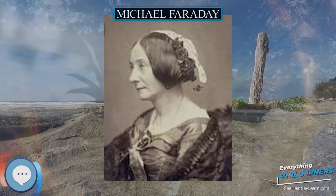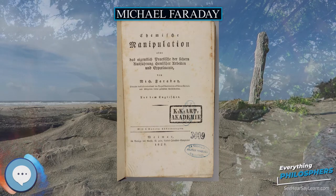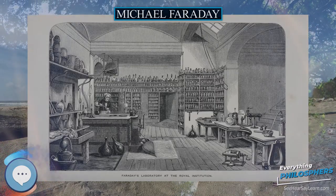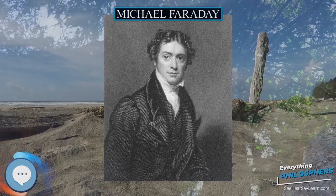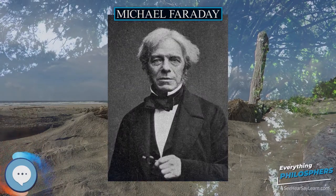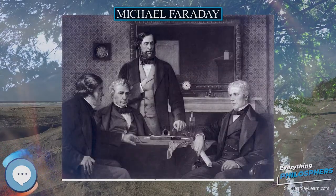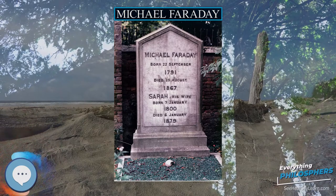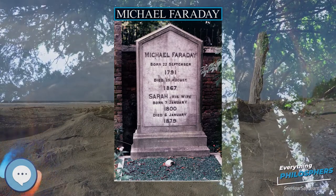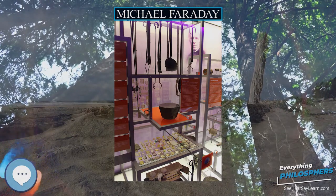Faraday married Sarah Barnard on June 12, 1821. They met through their families at the Sandemanian Church, and he confessed his faith to the Sandemanian congregation the month after they were married. They had no children. Faraday was a devout Christian; his Sandemanian denomination was an offshoot of the Church of Scotland. Well after his marriage, he served as deacon and for two terms as an elder in the meeting house of his youth. Biographers have noted that a strong sense of the unity of God and nature pervaded Faraday's life and work.